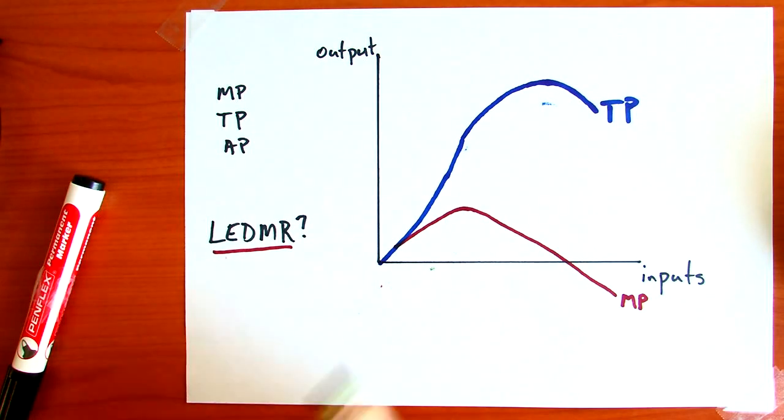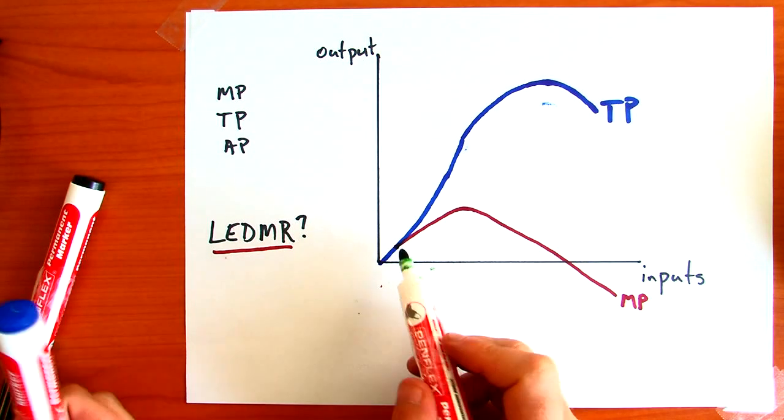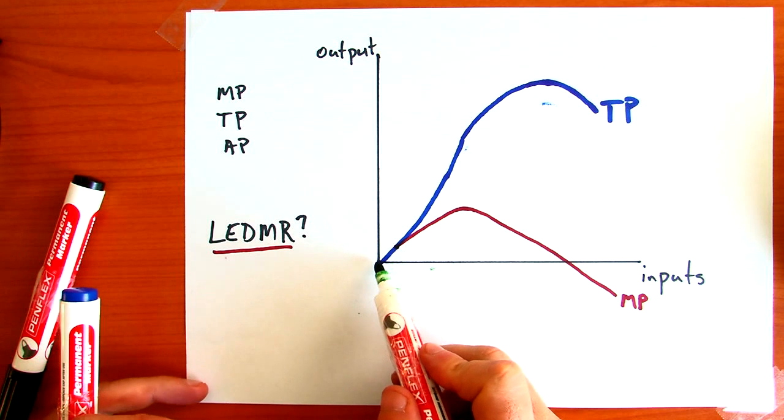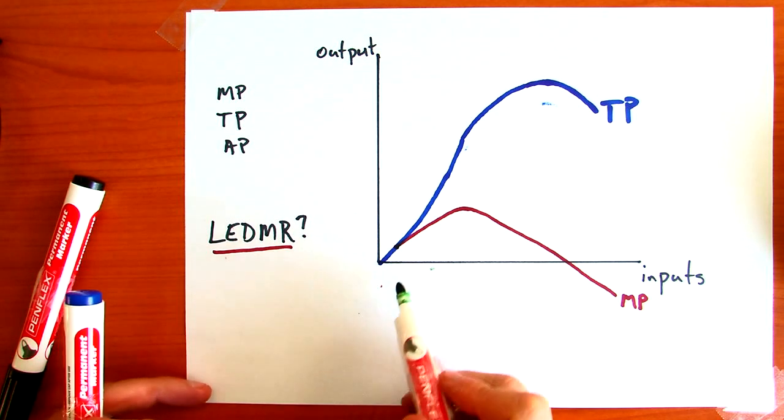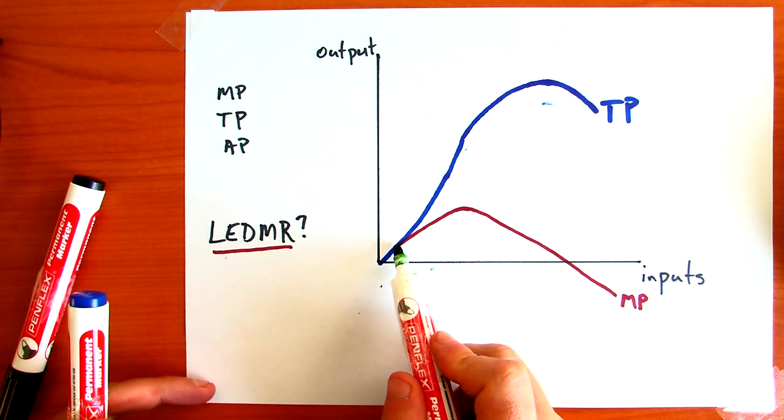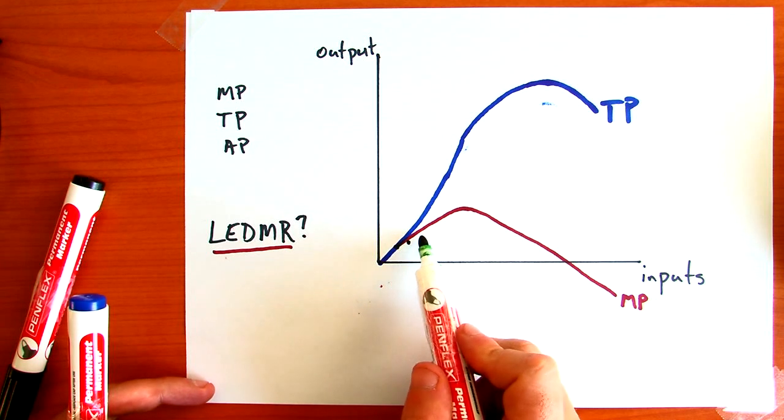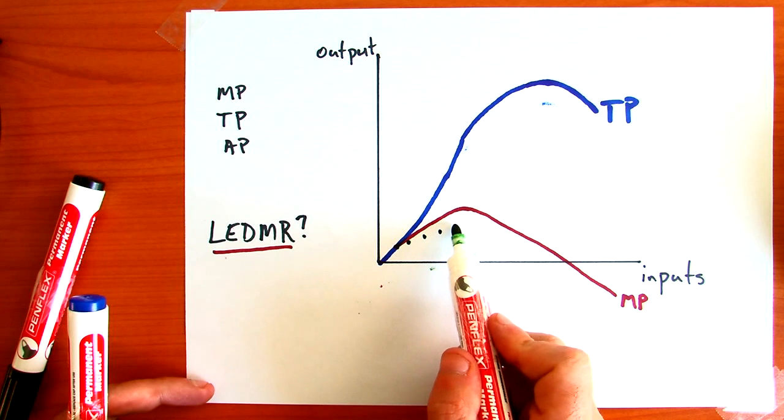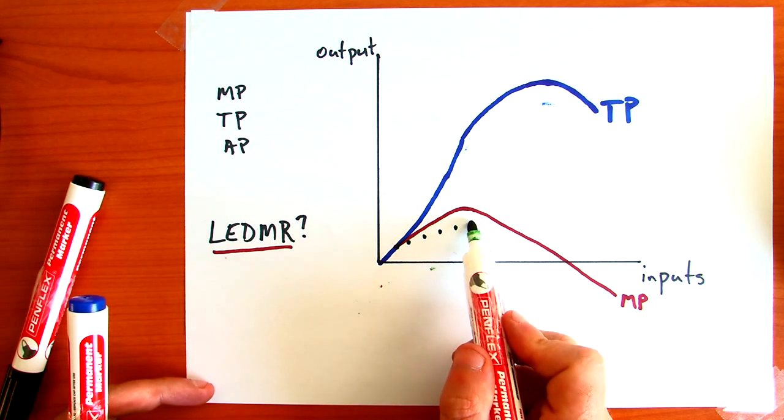Average production, likewise, starts at this position here, because you can't have any average production if your output and inputs are both zero. And it's going to go up along with marginal production, but it's going to continue to go up past the highest point of marginal production.